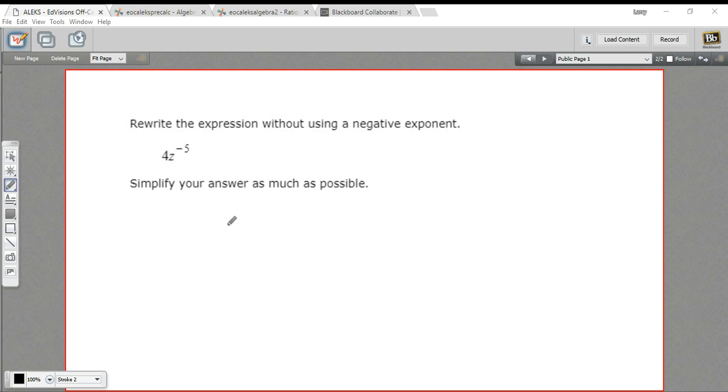The thing to remember here is that anything to a negative exponent, let's say we had x to the negative 2, is the same as 1 over that thing to the positive exponent. So x to the negative 2 equals 1 over x to the negative 2.